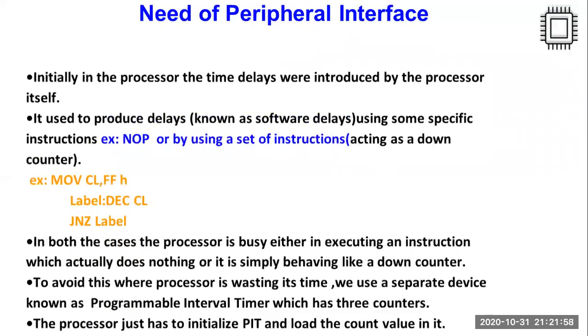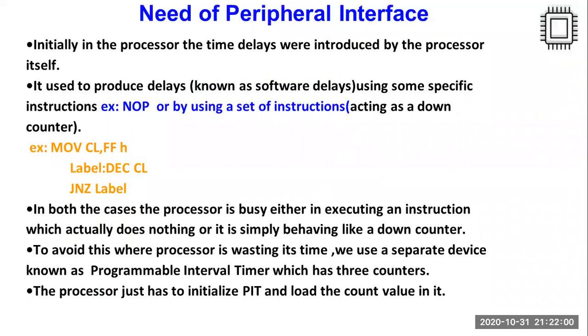Understanding the need of any specific IC with your basic processor is very important in microprocessor-based systems. Let us see why we require this 8253 IC in an 8086 based system. Initially, the processor used to introduce time delays on its own, using software delays with specific instructions, for example, by executing NOP instruction or by initializing a down counter.